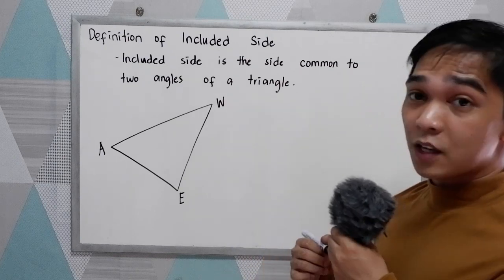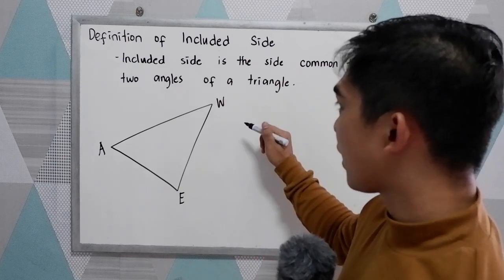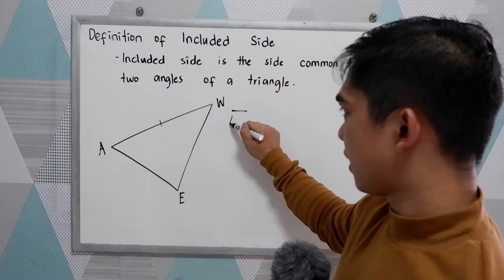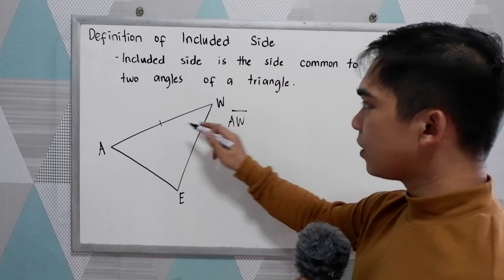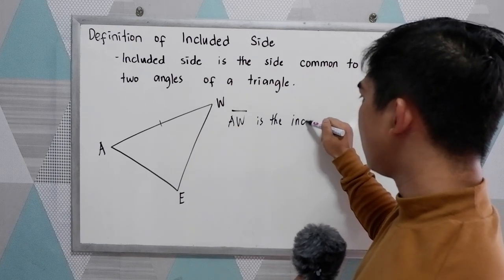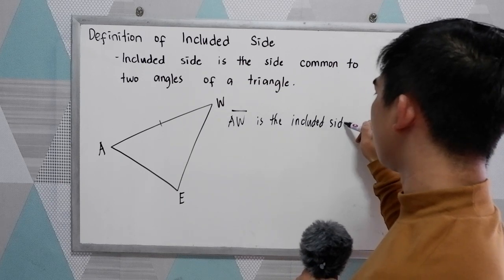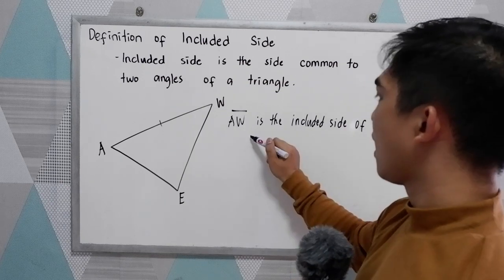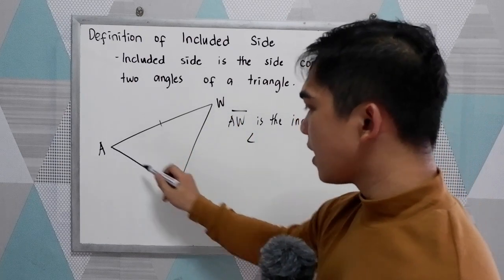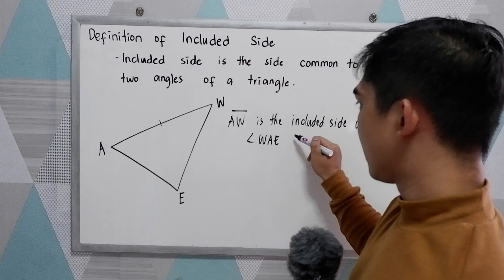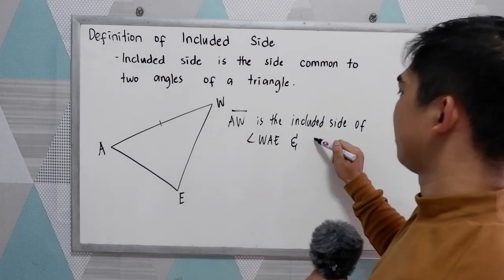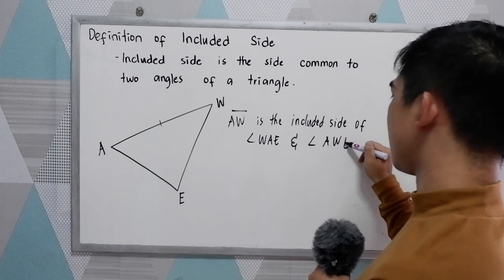So we are dealing with the included side. Let's say we have side AW. Side AW is the included side of angle WAE and angle AWE.